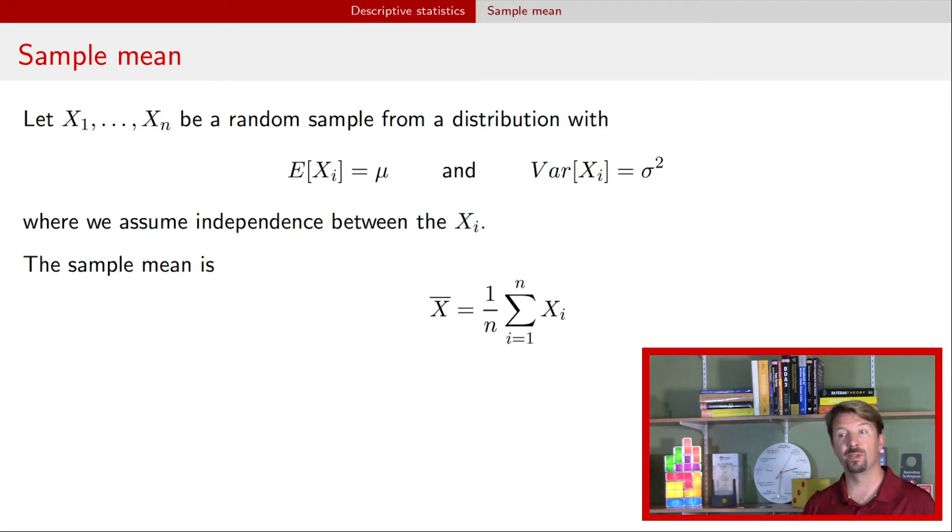And when we have that sample mean from this random sample from a population, where the observations, where the individual observations are assumed to be independent, and they all have a common mean, then it turns out that this sample mean is an estimator of the population mean. That population mean was up here. That's the expectation of these random variables. That's the value mu. It's unknown, but we're going to estimate it.